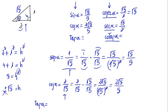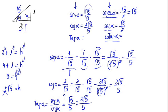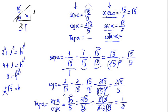Now let's calculate the tangent. The formula for the tangent is sine of alpha divided by cosine of alpha. That is the square root of 5 over 5, divided by 2 times the square root of 5 over 5. Division of fractions is done by cross multiplication: the 5s and square roots cancel, giving a result of 1 half. So the tangent of alpha equals 1/2, and the cotangent — the inverse of the tangent — equals 2 divided by 1, which is 2.